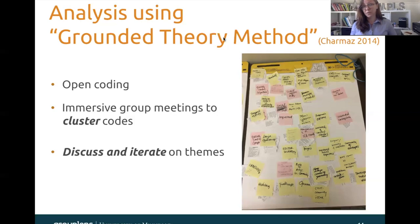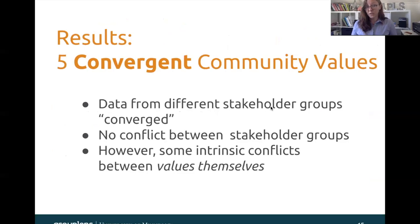The results were that we had five convergent community values. What do I mean by convergent? It's possible that different stakeholder groups could have very different values. However, this isn't what our data suggested — in fact, we didn't find much conflict at all between stakeholder groups. However, there were some intrinsic conflicts between the values themselves, and I'll be providing examples of that a little bit later in the talk.